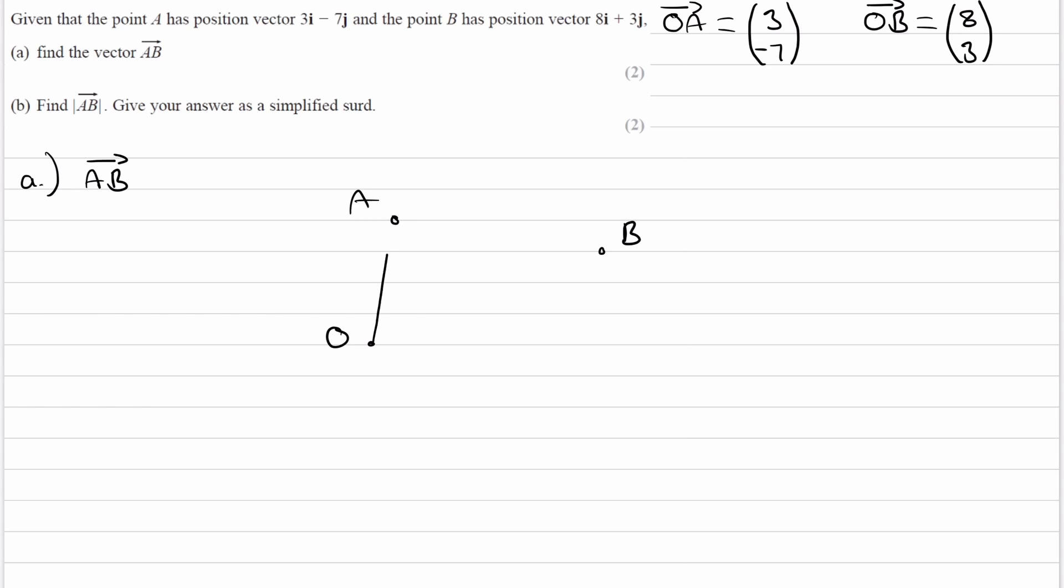And then, so the vector OA is this one, and the vector OB is this. So then, this vector here would be 3, -7, and then this vector here would be 8, 3.